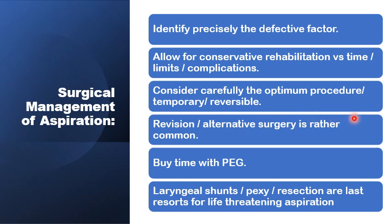It is common to have one, two, or even three procedures to try to sort out the problem of aspiration. We can sometimes buy time with a PEG, but if the problem is life-threatening and deemed irreversible, then we think about more radical types of surgery like resections, laryngeal shunts, and partial or total laryngeal shunts.